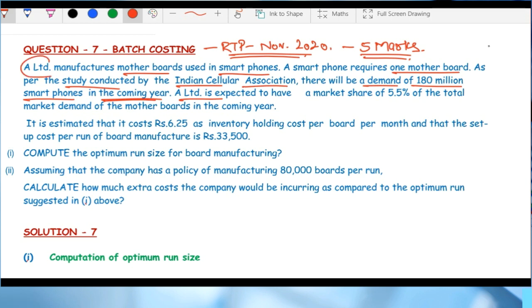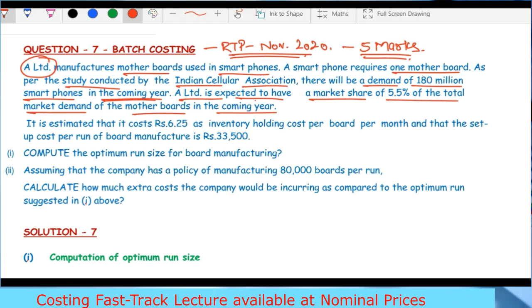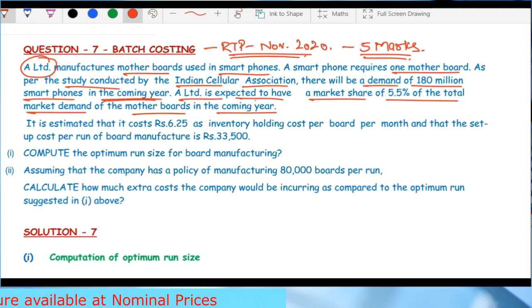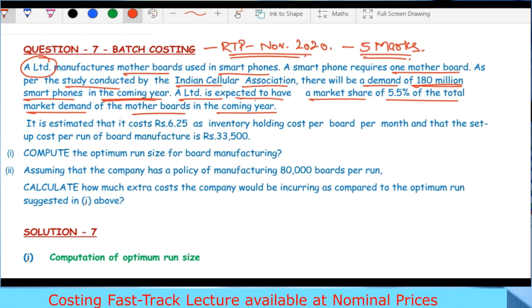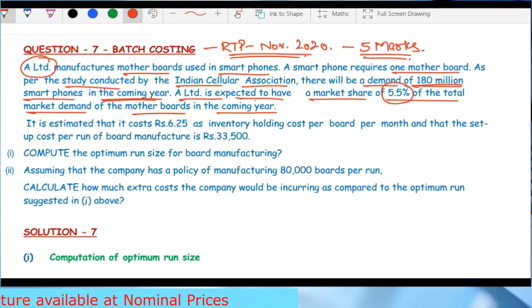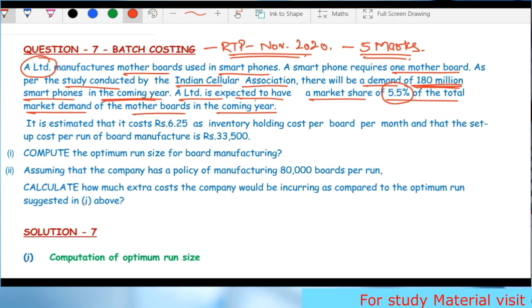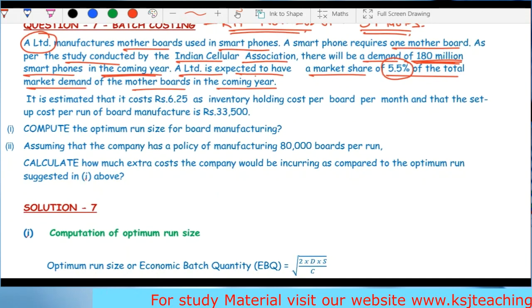A Ltd is expected to have a market share of 5.5% of the total market demand of motherboards in the coming year. So throughout the year, 180 million motherboards will be required, and A Ltd's share will be 5.5%, meaning 9.9 million units.